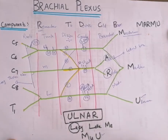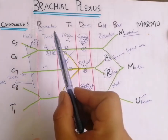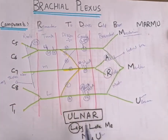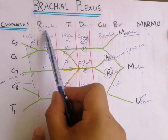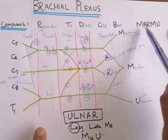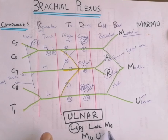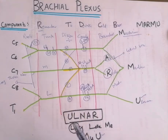This U in M4U is for the ulnar nerve. In summary, there are three key mnemonics: for the components, 'Remember To Drink Cold Beer'; for the terminal branches, 'MARMU'; and for the cords — posterior cord uses 'ULNAR', lateral cord uses 'Lucy-Lau-Mi', and medial cord uses 'M4U'. These make the brachial plexus easy to remember.